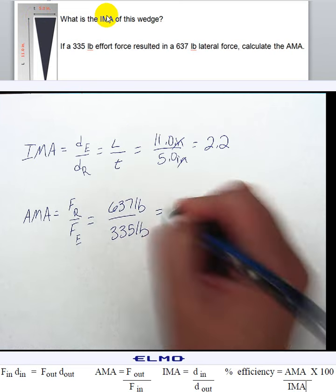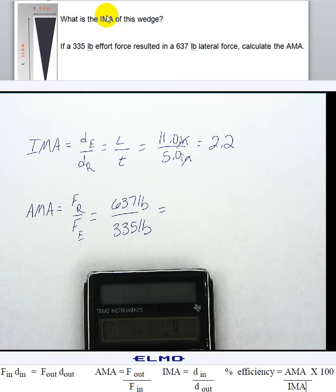Alright, so calculate the AMA. So, I plug it in, and it's 637 divided by 335. And again, if you'll notice, the one on top, almost all of the problems, except for those exceptions I already talked about, the number on top is going to be the bigger one.